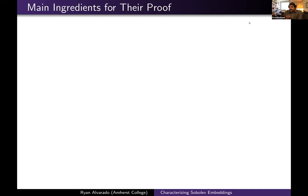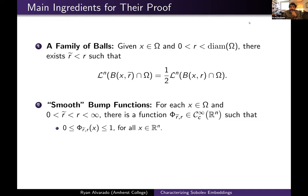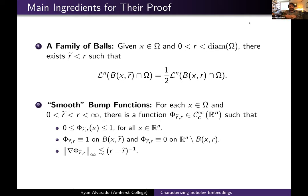Let me give a brief idea of the proof. There are two main ingredients: the ability to construct a family of concentric balls shrinking down to a point x, where at each stage the measure of the ball intersected with the domain is precisely half the measure of the ball from the previous generation. They also use the existence of a smooth bump function — a C-infinity compactly supported function which is identically one on the smaller ball, vanishes outside the larger ball, with gradient controlled by the distance between the inner ball and the complement of the larger ball.